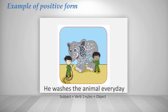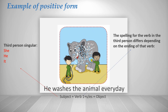Next sentence: 'He washes the animal every day' — subject + verb 1 + -es + object. We add -es to the verb because this sentence uses a third person singular subject. For third person singular subjects — he, she, it — we add -s or -es after the verb.